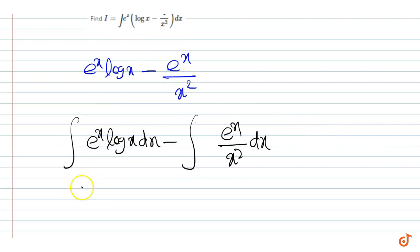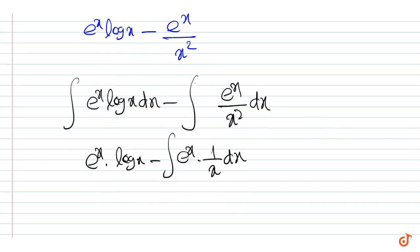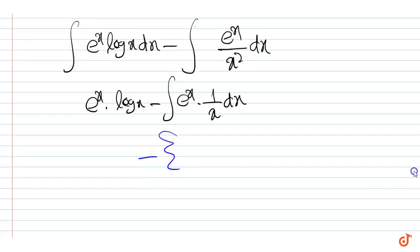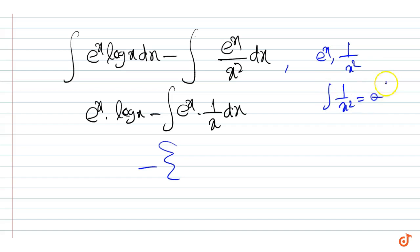Integrating by parts, we get e to the power x into log x minus integral of e to the power x into 1 by x dx. For the second integral, we take the first function as e raised to x and the second function as 1 over x squared. The integral of 1 by x squared is equal to minus 1 by x plus c.